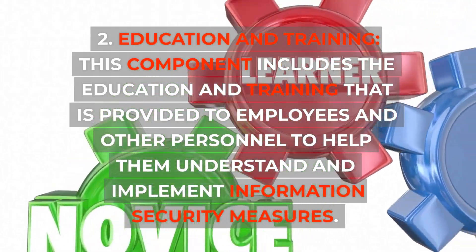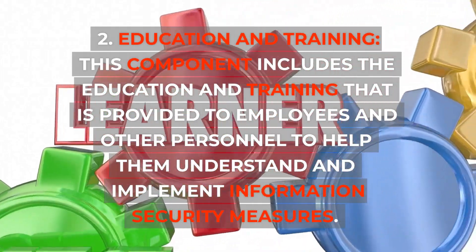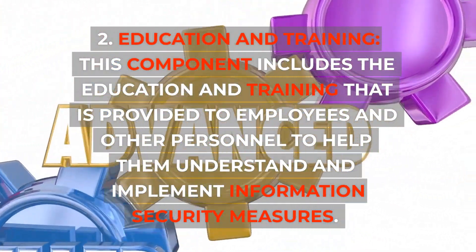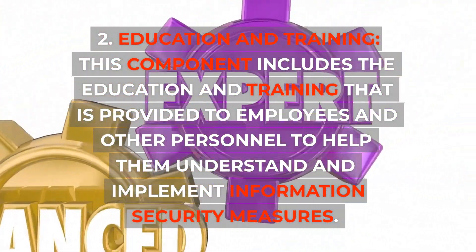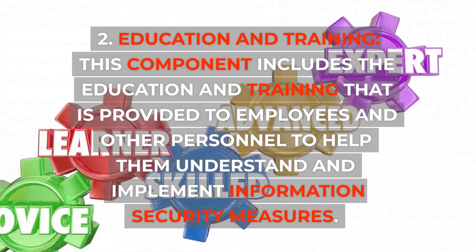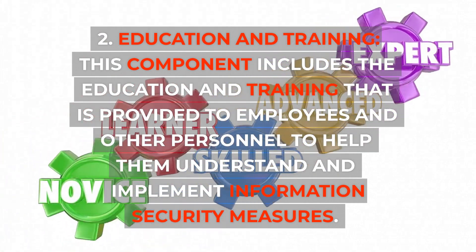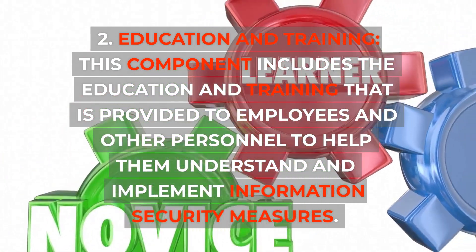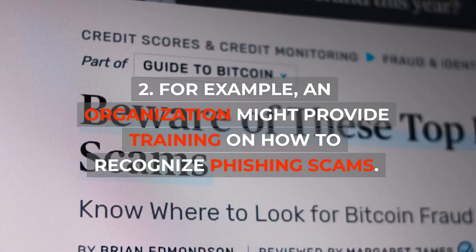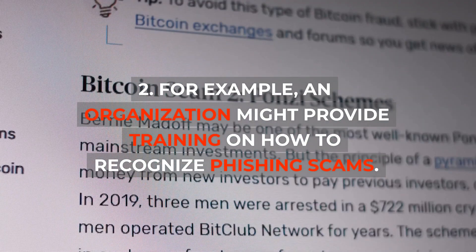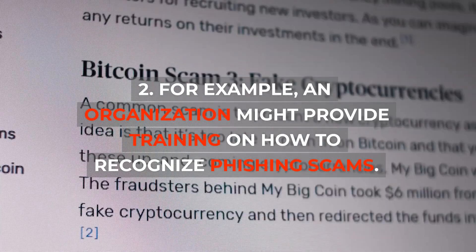2. Education and Training: This component includes the education and training provided to employees and other personnel to help them understand and implement information security measures. For example, an organization might provide training on how to recognize phishing scams.